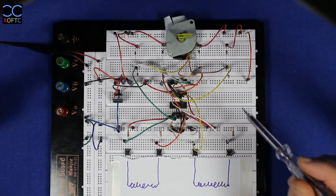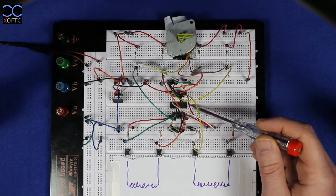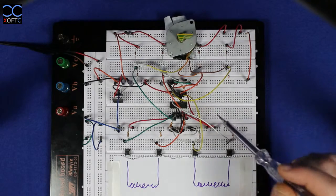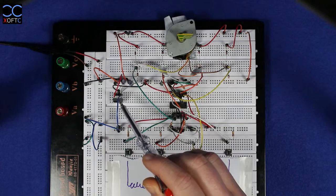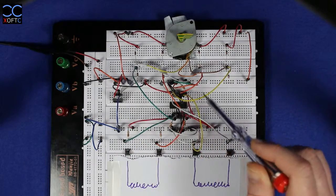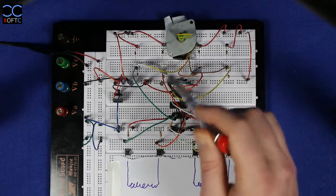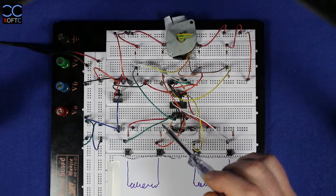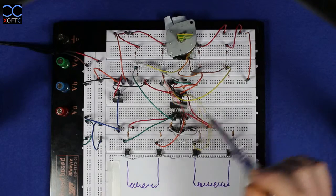Here we have an L293, which is a dual H-bridge, and here we have a voltage regulator which regulates from 12 to 5 volts. The 12 is used to feed the H-bridge so it feeds it to the stepping motor, and the 5 is used to feed the inputs and power the chip itself.